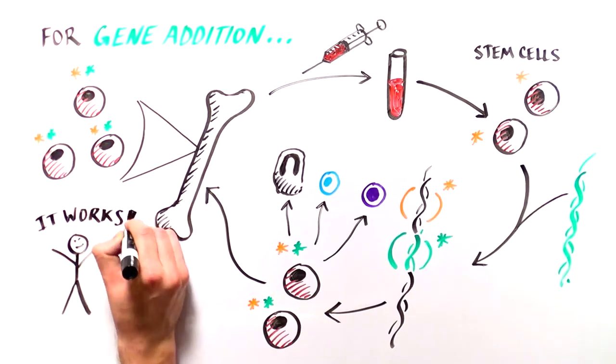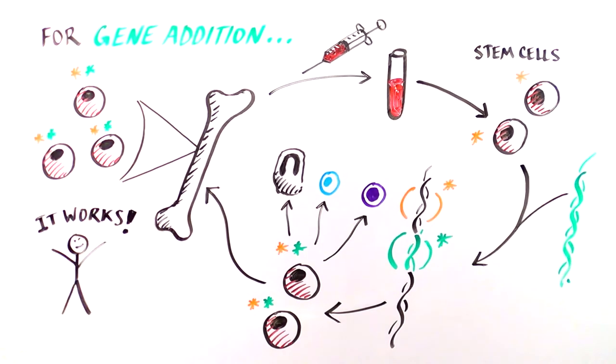Incredibly, this method works. The first SCID trial using gene addition was conducted over 20 years ago, and researchers have improved on the technique a great deal. The last 30 SCID babies treated with gene addition have developed a good working immune system that has stayed stable over time.